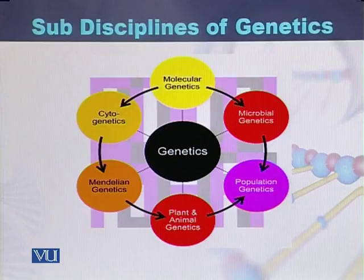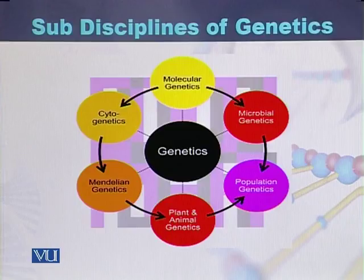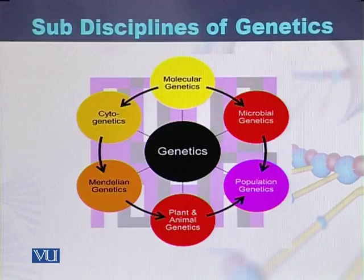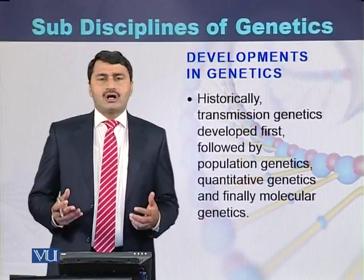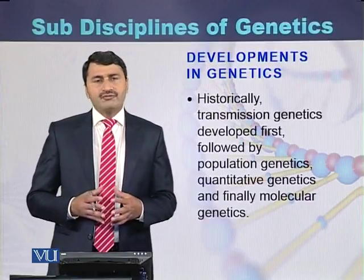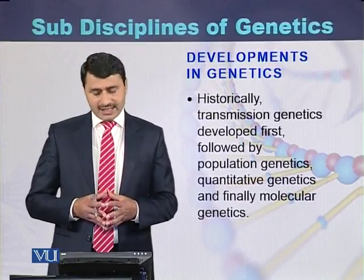Population genetics is the study of genetics of a specific population, or the people present in a particular area. If we study the genetics of microbes — like the genetics of bacteria or the genetics of viruses — then this category is called microbial genetics.